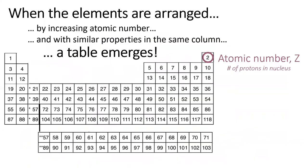The big takeaway here is that the periodic table is arranged in order of increasing atomic number. Furthermore, all the elements in a column share similar chemical properties.